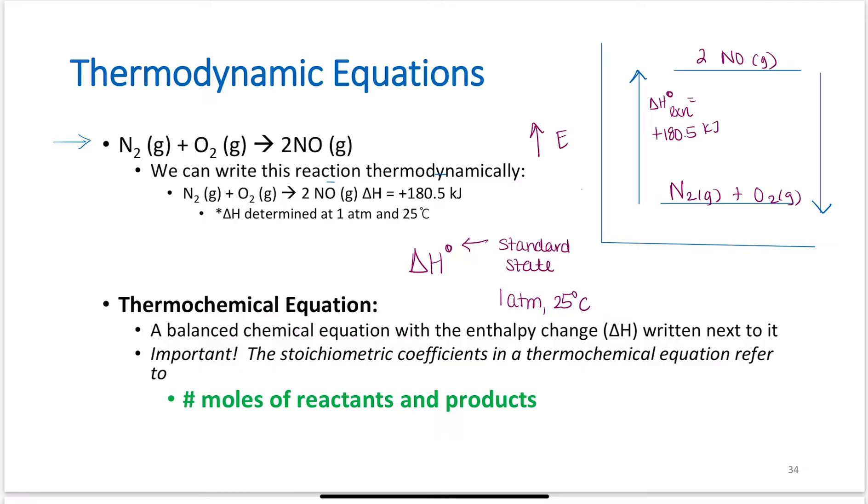What that also means, though, is that the reverse reaction, delta H of reaction, having 2 moles of NO react to form 1 mole of N2 and 1 mole of O2, would release 180.5 kilojoules. So if it's written as positive one direction, it's negative the other direction. If the reaction flips around, it's the opposite sign. Because these are state functions. We don't care how we got there. We only care where we're at.